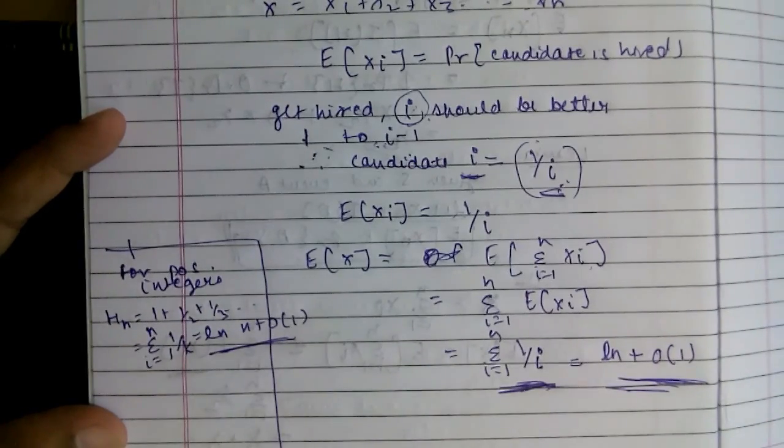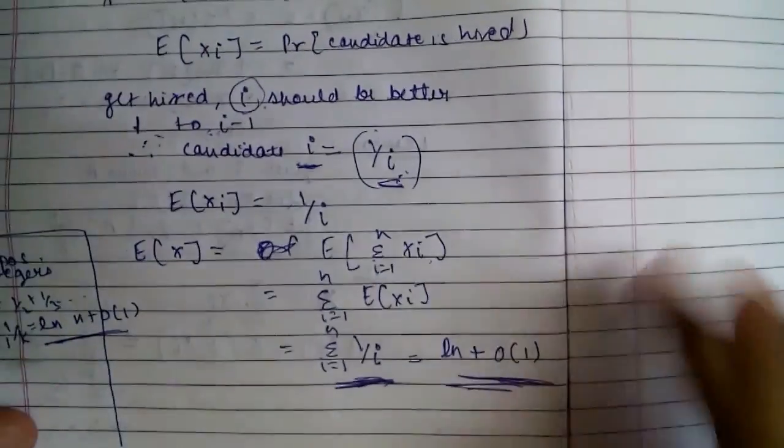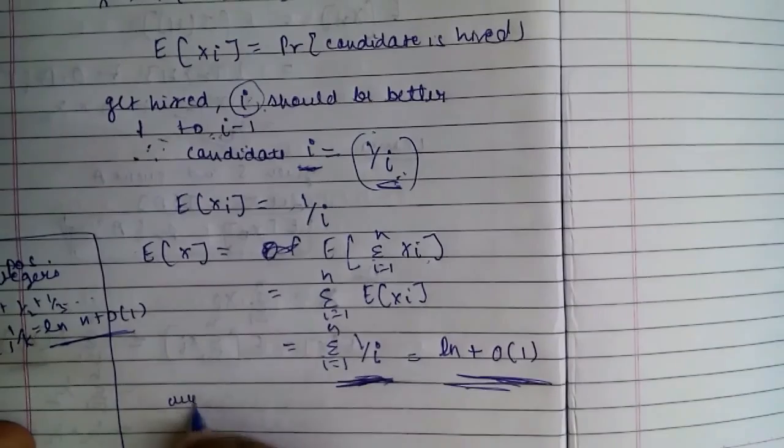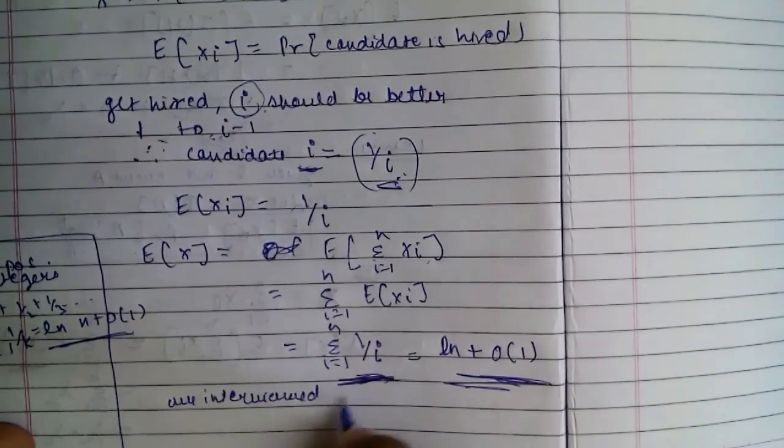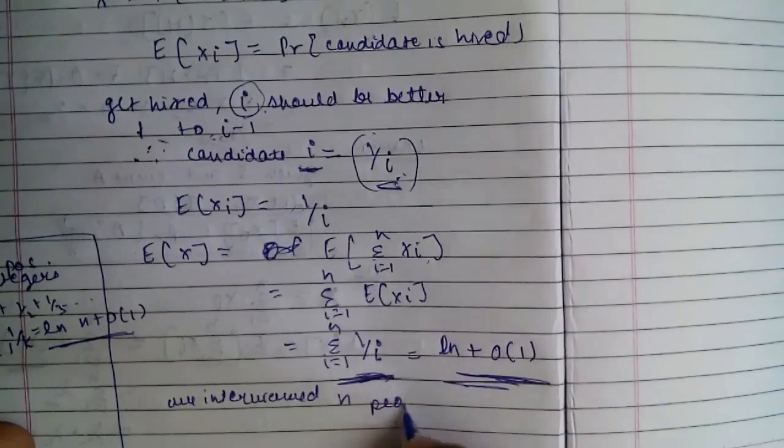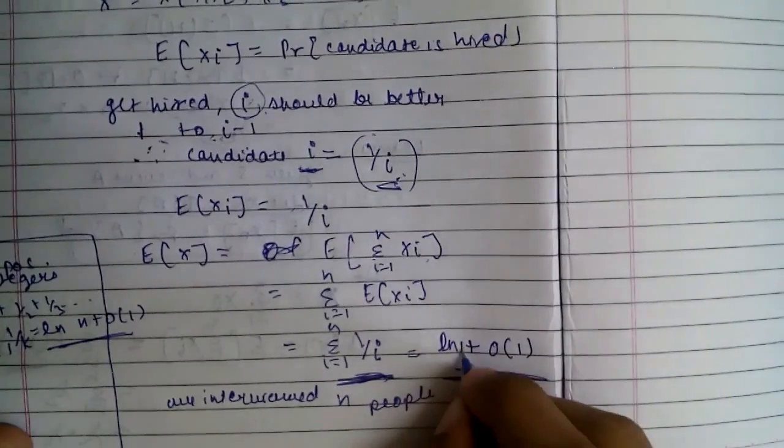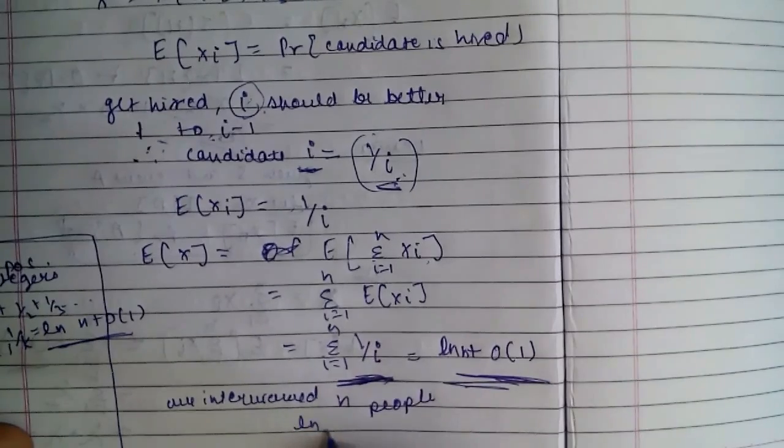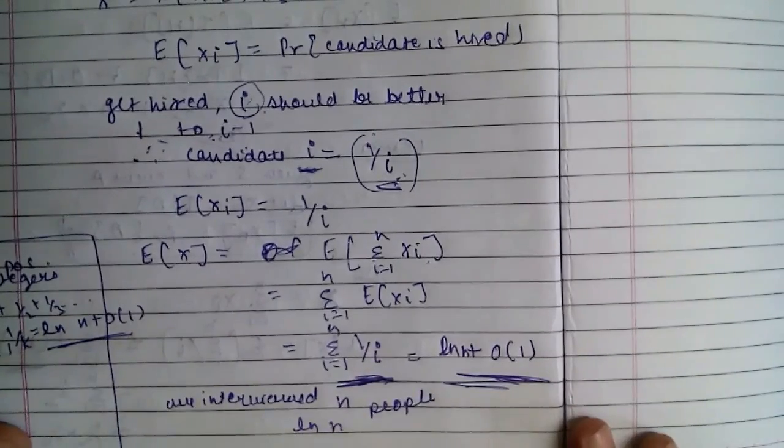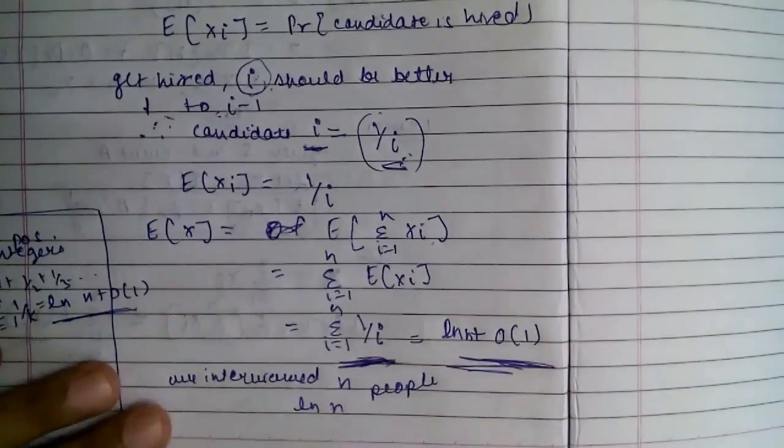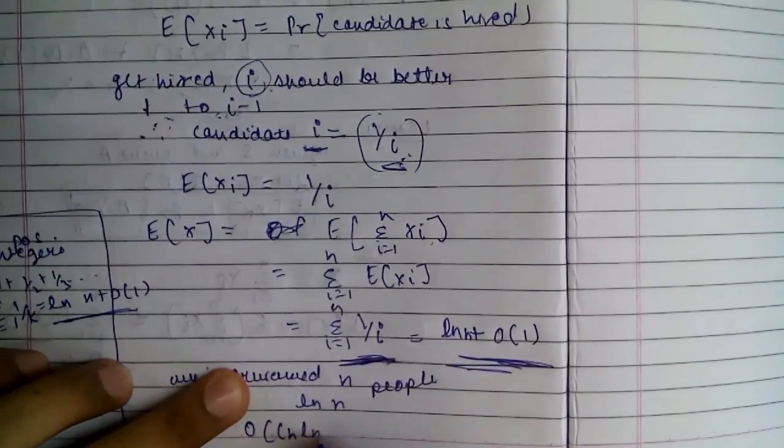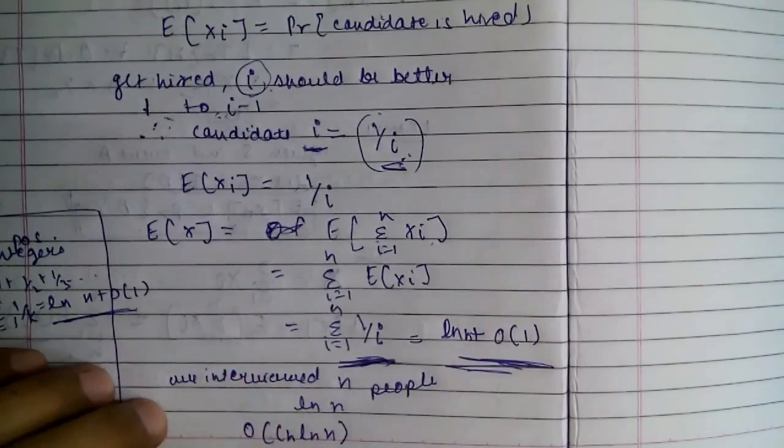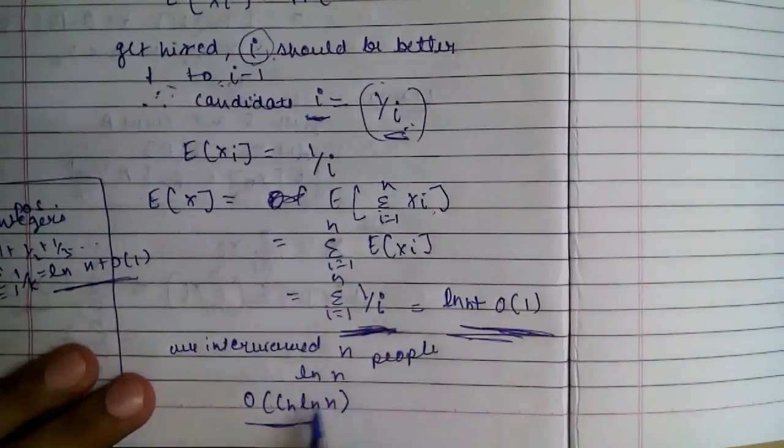So what happened here is that we interviewed n people but hired log natural of n. So our average case will be O of C_I times log n, which is a significant improvement.